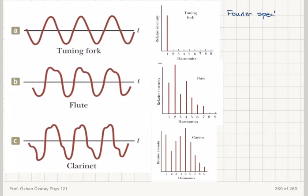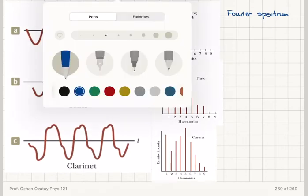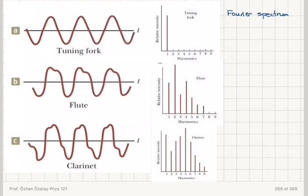So Fourier spectrum is basically showing us the contributions from each frequency in the sounds. For example, for the tuning fork we have only the fundamental frequency. So if you look at the relative intensity...